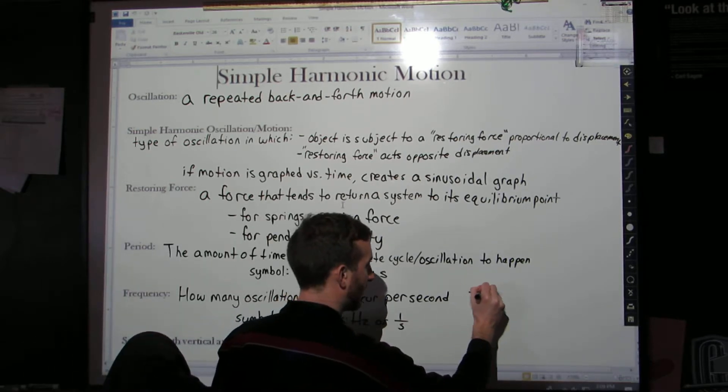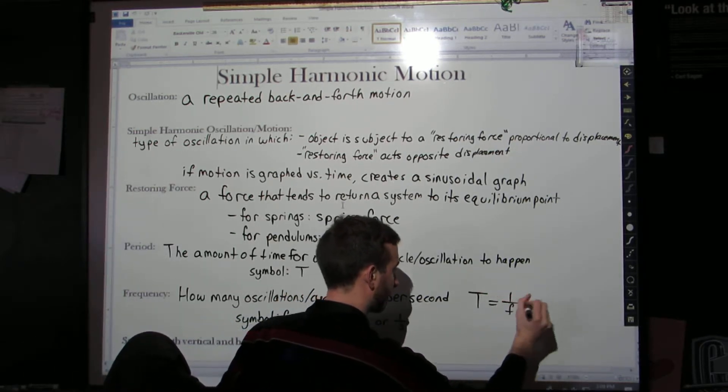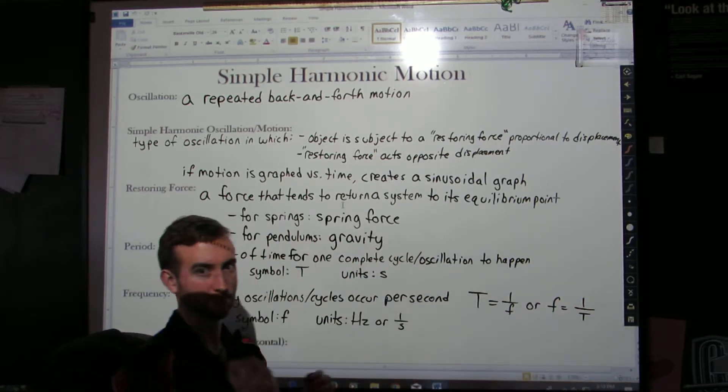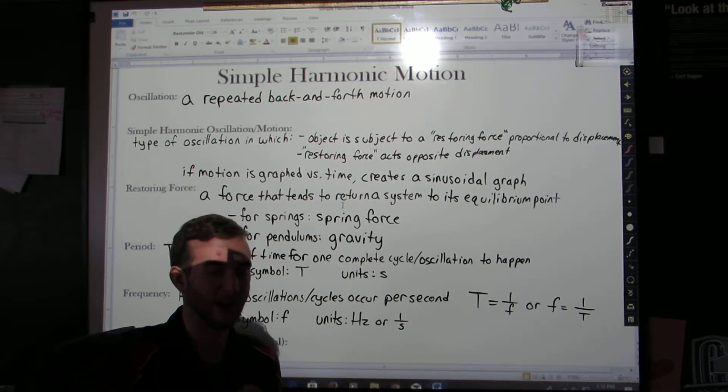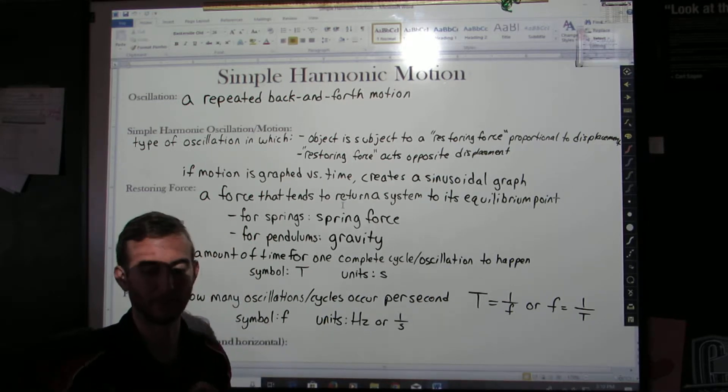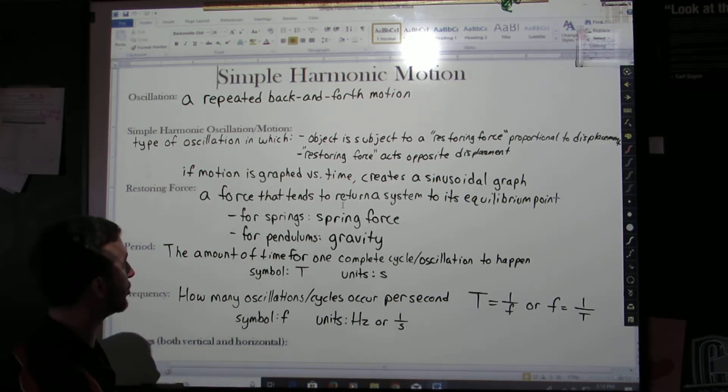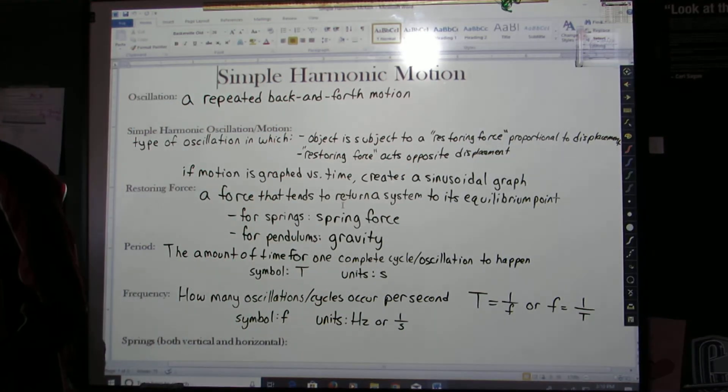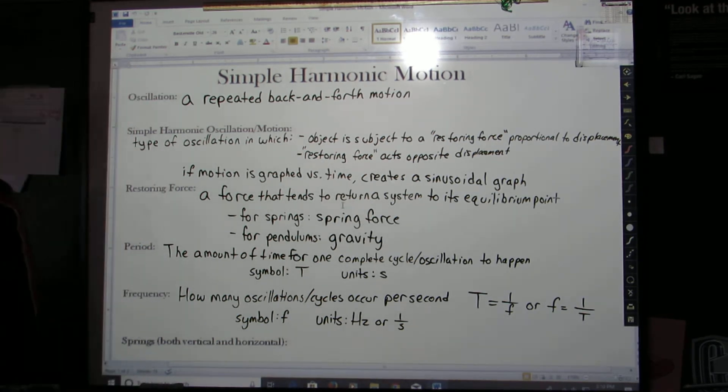So the one thing you should remember, if you look here, you have seconds for the units for period. For frequency, you have one over seconds or inverse seconds. This should remind you that period and frequency are inverses of each other. If you know one, you know the other. If the period of something is five seconds, then the frequency is 0.2 hertz. If the frequency is 100 hertz, then the period is 0.01 seconds. They are inversely related to each other. So these are some just general definitions that you need to know. Hopefully you have them copied down. Obviously you can always just pause this if you want to take some more time to copy it down. I'm going to erase them, we'll get into some of the details.